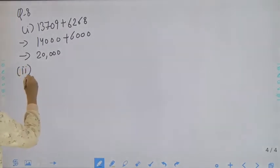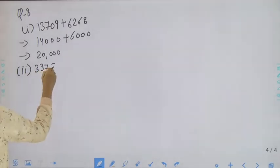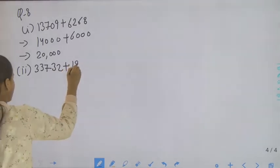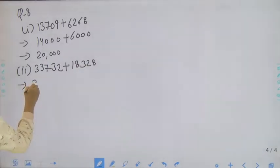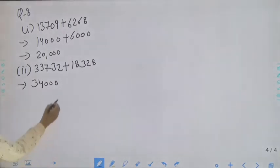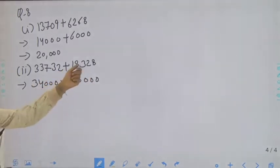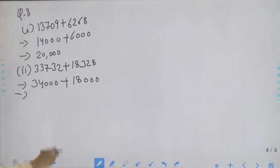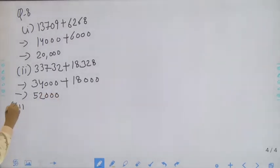Now move to the second part: 33,732 plus 18,328. So 33,732 will round off to 34,000 and 18,328 will round off to 18,000. 34,000 plus 18,000 it will be 52,000. Now move to the next part, that is the third part.